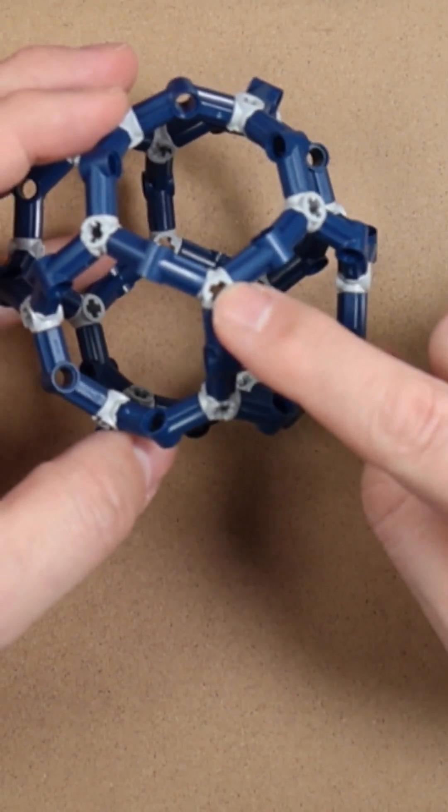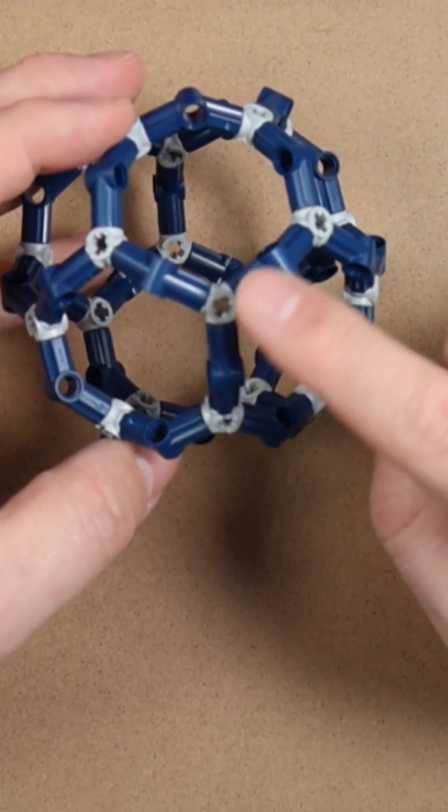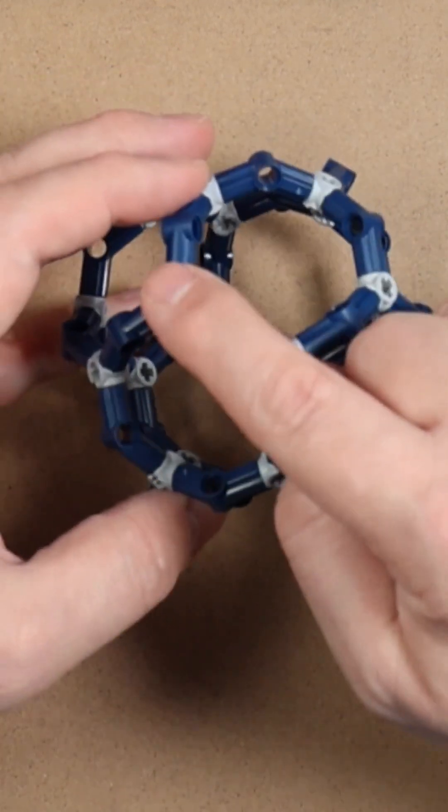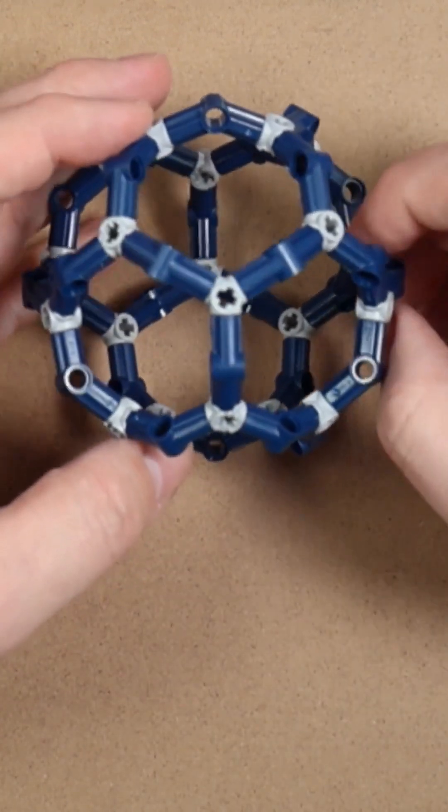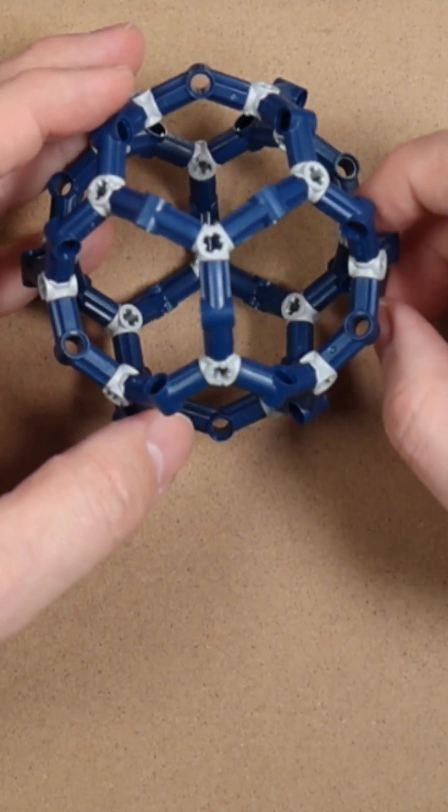Now you might say, wait, what's an icosahedron? Well, it's a 20-sided shape formed as triangles. And now what we're doing is connecting each face with its neighbor. It's maybe not so obvious to see what's going on, so let's throw in the triangles.